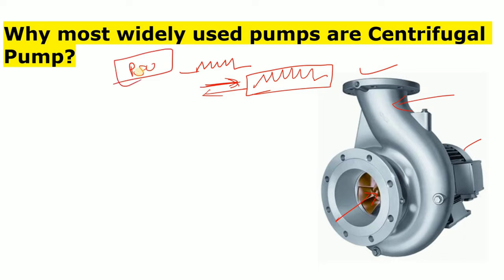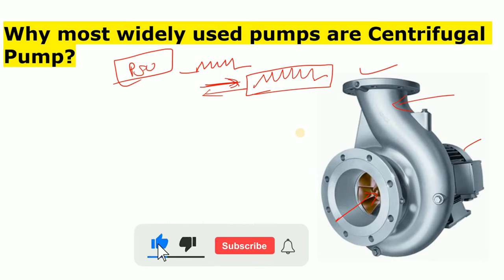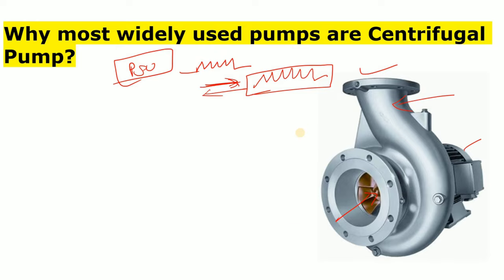The initial cost of a centrifugal pump is also very low. There are some disadvantages as well, but the main reasons why centrifugal pumps are the most widely used are: simple construction, easy operation, low maintenance cost, minimum vibration, flexibility of operation, no pulsation, and low initial cost.